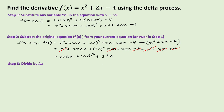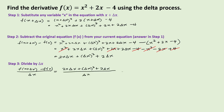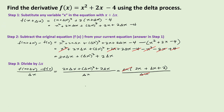For step three, we divide our answer in step two by delta x. So we have f of x plus delta x minus f of x over delta x, giving us 2x delta x plus delta x squared plus 2 delta x over delta x. Factoring out delta x from the numerator gives delta x times 2x plus delta x plus 2 over delta x, and we cancel delta x, leaving 2x plus delta x plus 2.